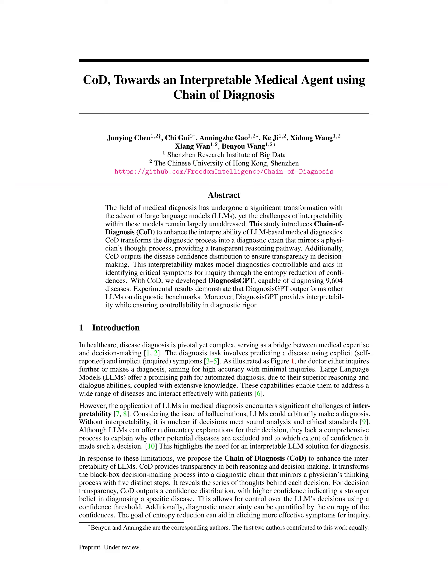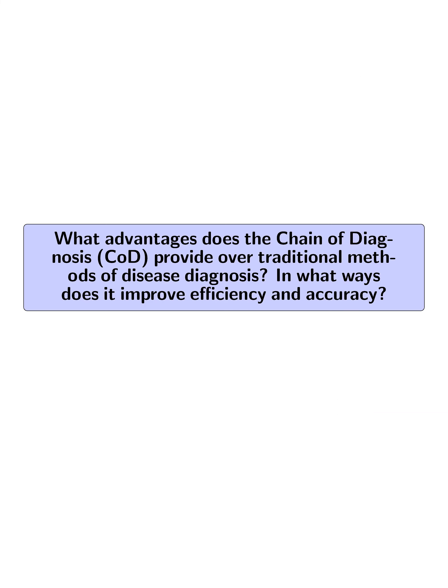Together, these steps create a transparent and interpretable diagnostic process that mirrors a physician's reasoning, enhancing the reliability of automated medical diagnoses. What advantages does the Chain of Diagnosis (COD) provide over traditional methods of disease diagnosis? In what ways does it improve efficiency and accuracy?